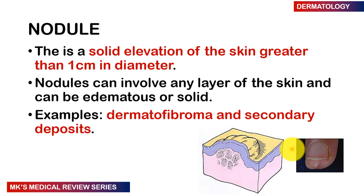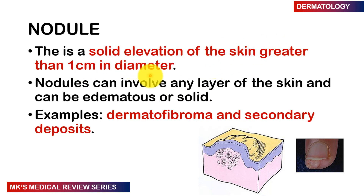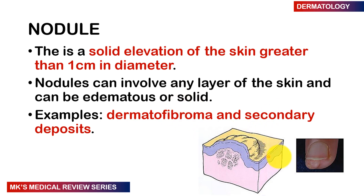A nodule is the bigger variant of a papule — a solid elevation of skin greater than one centimeter in diameter. Nodules involve any layers of the skin and can be edematous or solid. They are seen in conditions such as dermatofibromas and secondary deposits. Here is an image at the bottom showing what a nodule looks like.